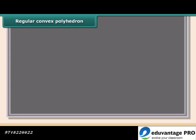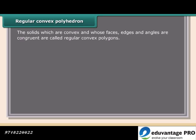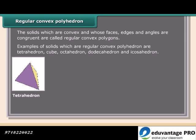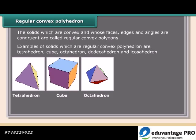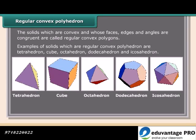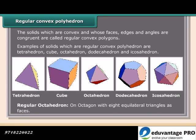Solids which are convex and whose faces, edges, and angles are congruent are called regular convex polyhedrons. Examples of regular convex polyhedrons are: tetrahedron, cube, octahedron, dodecahedron, and icosahedron. A regular octahedron has eight equilateral triangles as faces.